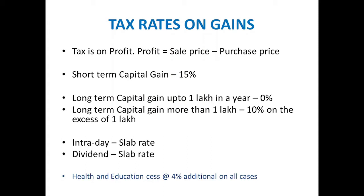Intraday, as it is taxable under PGBP, is paid as per the slab rate. Dividend income taxable under other sources is also at the slab rate. We need to pay the health and education cess at the rate of 4%, which is additional in all the above cases.